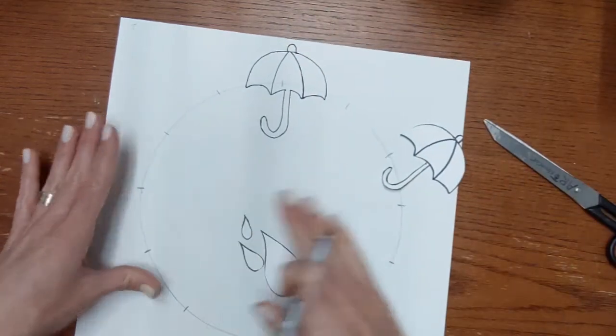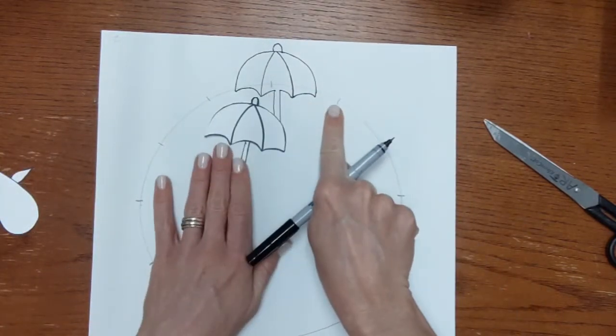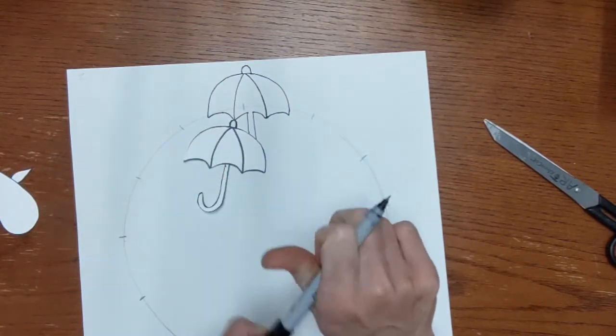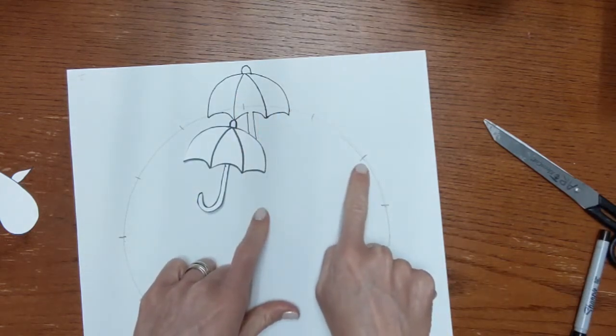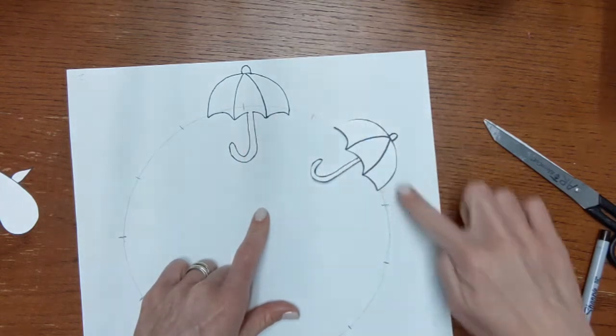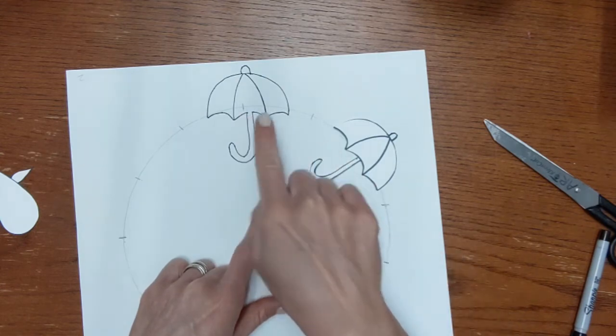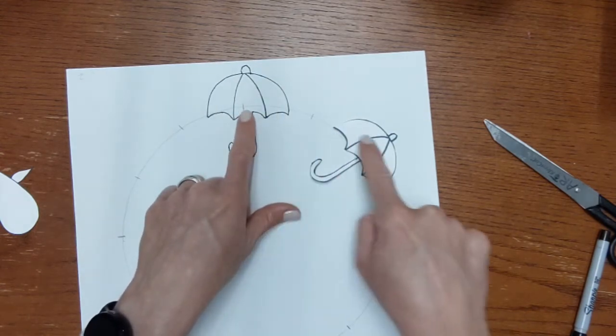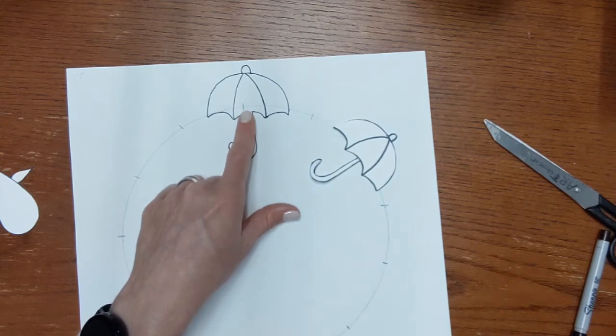And I'm going to push these raindrops off to the side for a minute. I'm going to skip this mark right here, and I'm going to come to the number two o'clock mark and I'm going to trace my umbrella again. And I'm going to keep going around tracing my umbrella on every other mark. So it's like umbrella, mark, umbrella, mark, umbrella, mark. So I'm going to finish doing that.